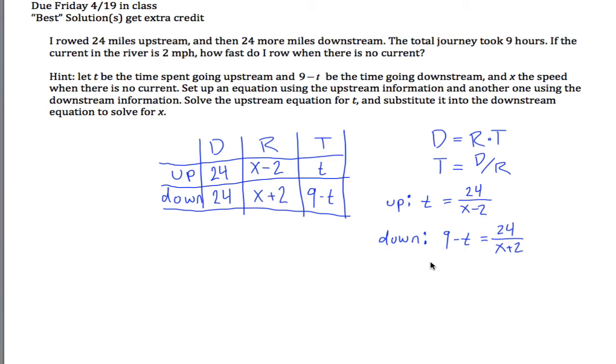And then as the hint kind of says here, I've solved for t in the upstream equation, so I can substitute that into the downstream equation. Maybe it's time to change colors and get 9 minus, so I'm taking this downstream equation right here, but instead of writing t, I'm going to write 24 over x minus 2, because I just figured out that t was equal to 24 over x minus 2. So 9 minus t, this thing being t, is equal to 24 over x plus 2, that's what I got over here.